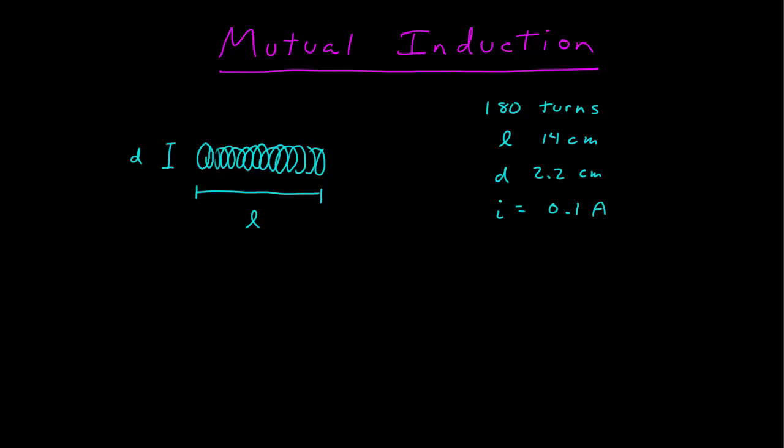We want to see what it induces in another solenoid that's wrapped around this first one. We're going to say it's tightly wound. If we see tightly wound, what that's really telling us is that we can approximate that the diameter of the two coils are about the same. We're going to say this coil only has 20 turns and we want to find the EMF induced in this coil.